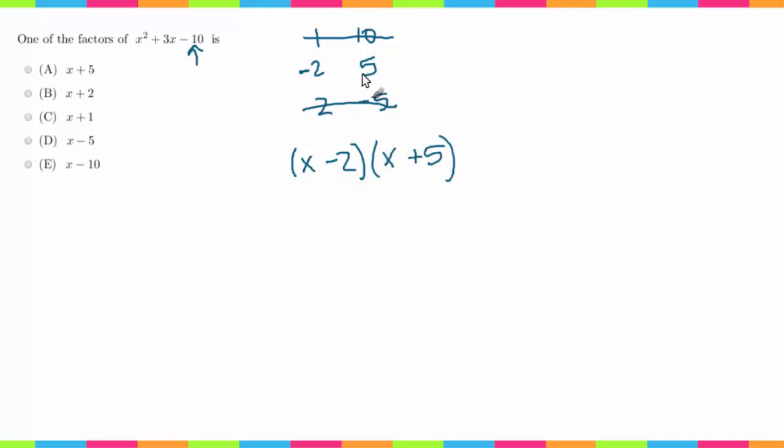If you were to FOIL this out—FOIL stands for first, outside, inside, last—you would get this. These are equivalent. This here and this here, you're just writing them in a different form. This form is multiplied out, this form is factored.